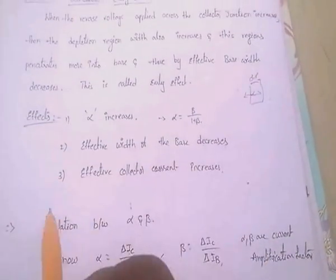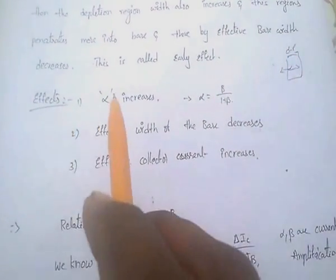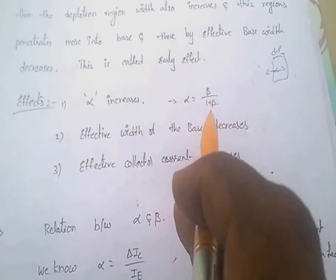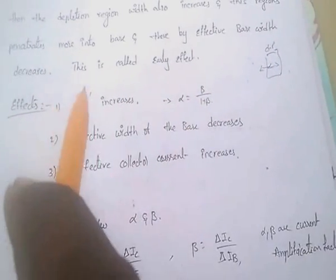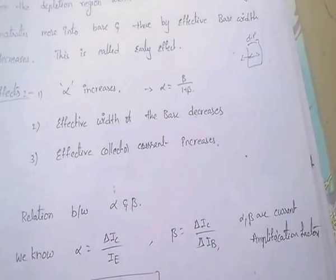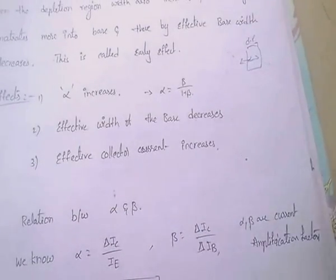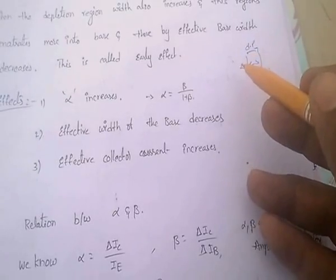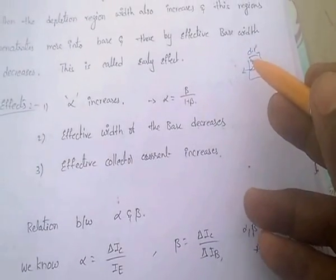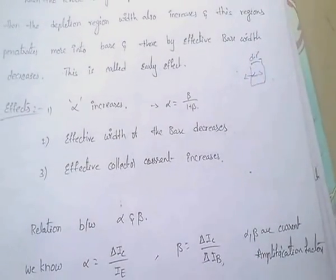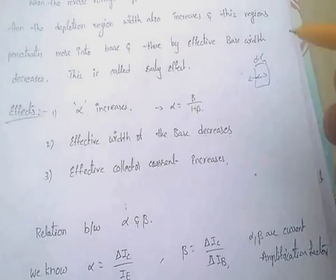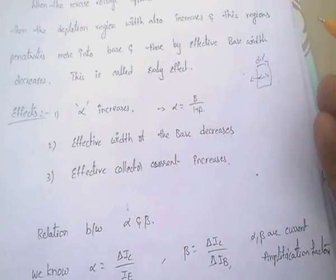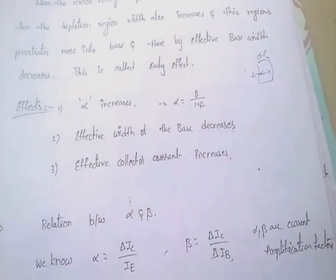Due to the early effect, alpha value decreases. We know that alpha equals beta divided by (1 plus beta). The effective width of the base decreases, and as base width decreases, current flows more easily from emitter to collector, so the collector current increases.